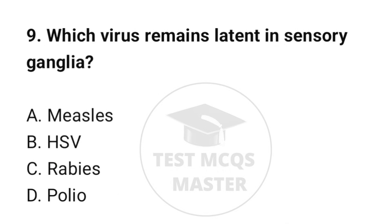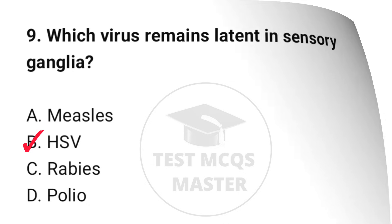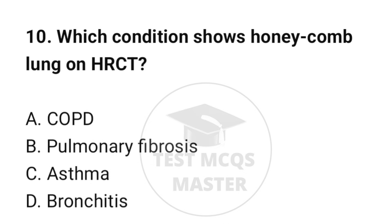Question number 9: Which virus remains latent in sensory ganglia? The correct option is B: HSV. Question number 10: Which condition shows honeycomb lung on HRCT? The correct option is B: Pulmonary fibrosis.